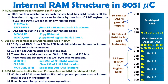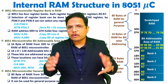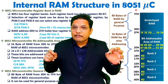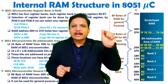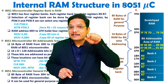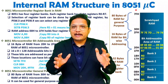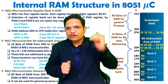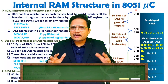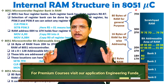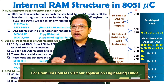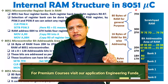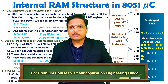In summary, internal RAM has 128 bytes: 32 bytes for register banks, 16 bytes for bit-addressable RAM, and 80 bytes for general purpose use. One more essential thing to note is that the stack pointer holds the address of the top of the stack, which resides inside this RAM, and is used for push and pop operations. I hope this is clear — post any confusion in the comment box. Thank you for watching.